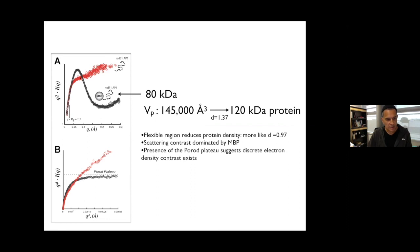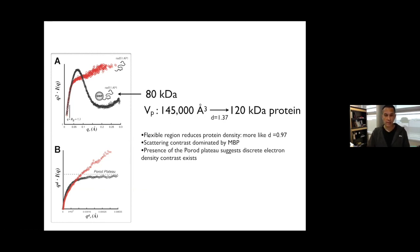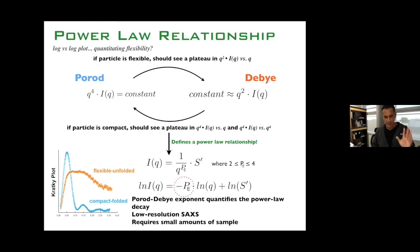Calculating the volume from the biphasic system comes out to ~145,000, which is an overestimate. On the q⁴·I(q) plot, the mixed particle forms a Porod plateau at some point, but for RAD51AP1 alone it just keeps going. The Porod-Debye exponent is obtained by taking the natural log of the intensities — you then get an exponent on a power-law plot, which you fit.